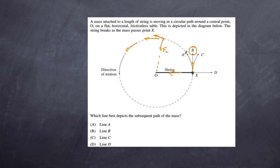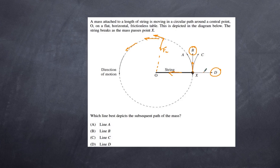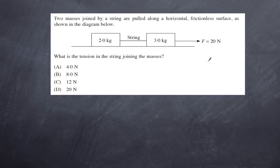A is not correct because centripetal force would need to be constantly at play. C is a ridiculous answer — there's no reason it would react in the opposite direction. One common misconception is that D might be correct, but that is wrong. There is a belief that some force is being exerted outward at X, but that reaction force only exists as a response to the centripetal force. This so-called outward force is not a real force and must be discounted.